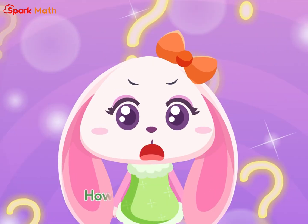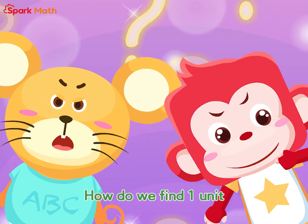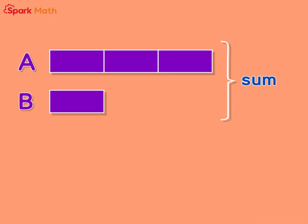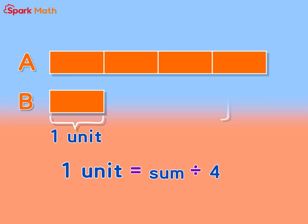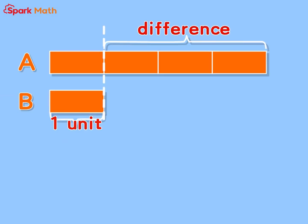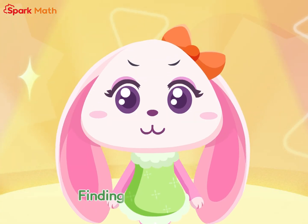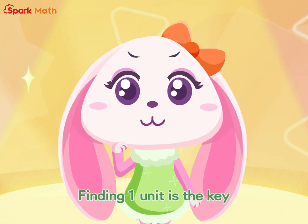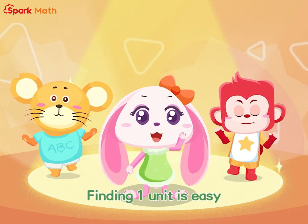How do we find one unit? For sum and multiple word problems, divide the sum by the total number of units. For difference and multiple word problems, divide the difference by the difference in the number of units. Finding one unit is the key — finding one unit is easy.